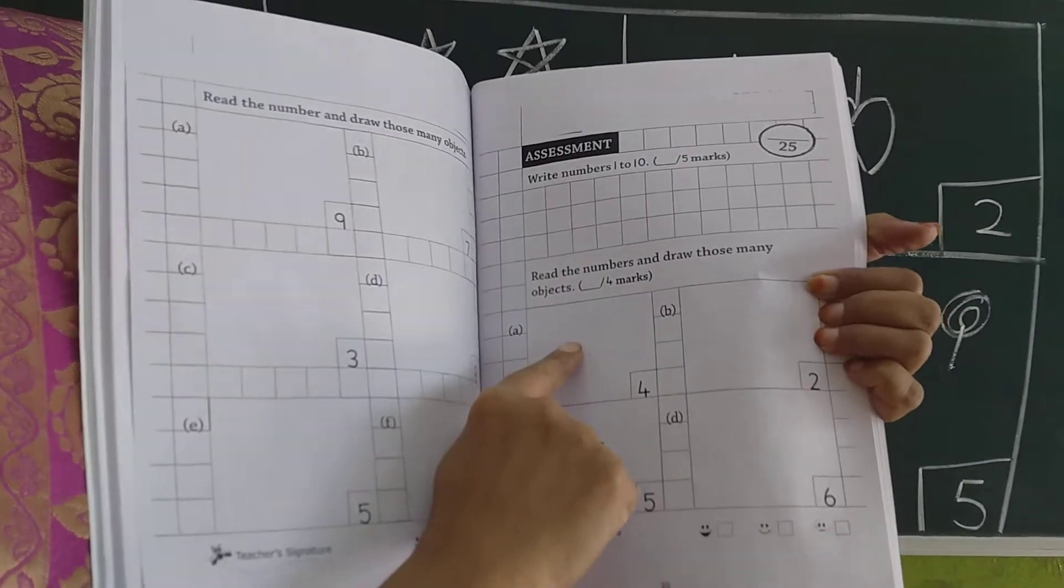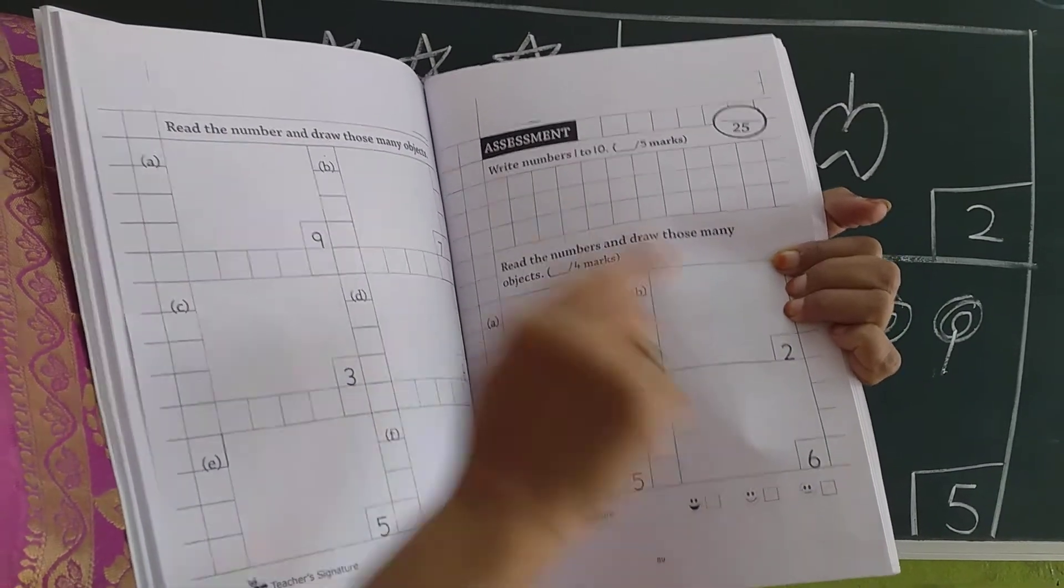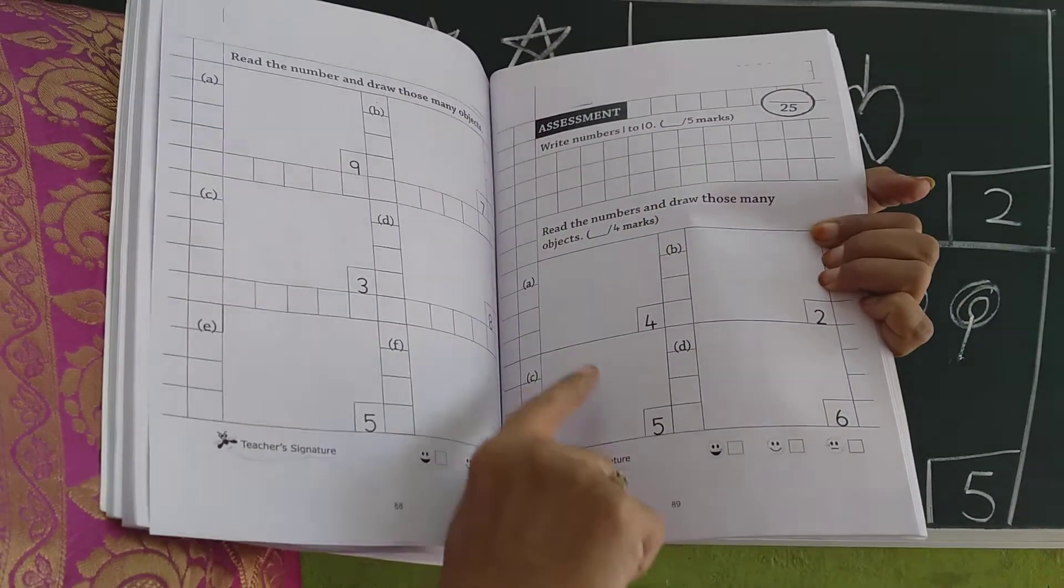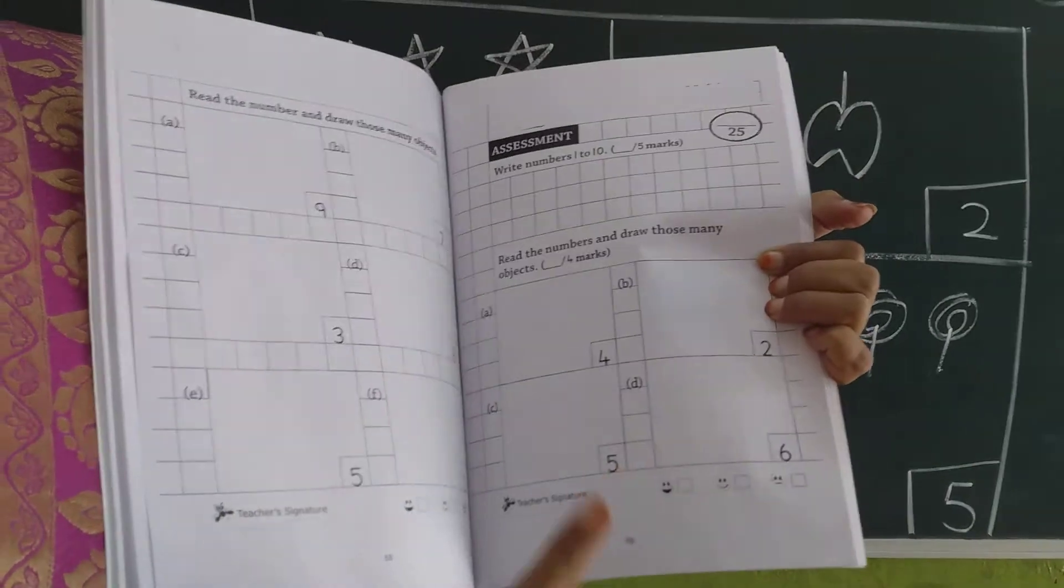And here you have to draw the objects. 4 is there means 4 objects. 2 means 2 objects. 5 means 5 objects. 6 means 6 objects. Okay?